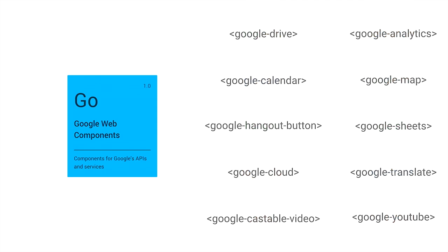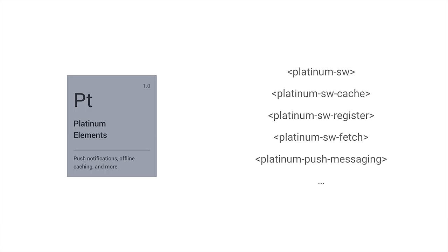We also ship the Google Web Components — wrappers around APIs that various Google projects provide, things like Google Maps, Google Drive, and YouTube. We take their imperative JavaScript APIs and wrap them in a component so you can use them declaratively on your page, just like any other element. And we announced the Platinum Elements — wrappers around Service Worker features — to make it easier to leverage those in your application declaratively, letting you develop a progressive web app using declarative components.